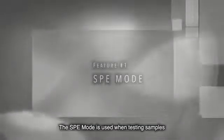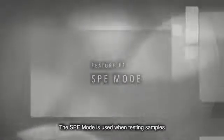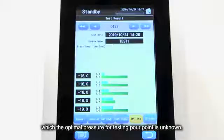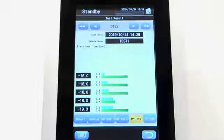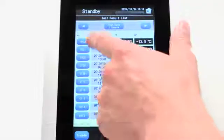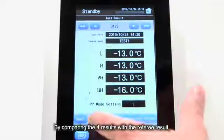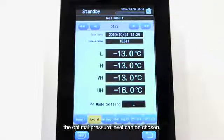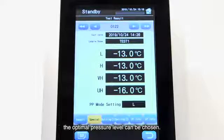The SPE mode is used when testing samples which the optimal pressure for testing pour point is unknown. When using this mode, the instrument will test at four different pressure levels automatically and give four results. By comparing the four results with the referee result, the optimal pressure level can be chosen.